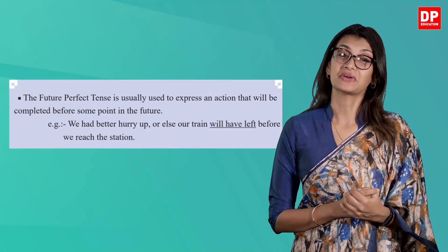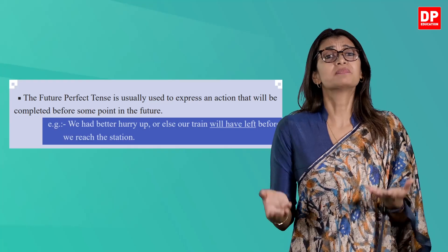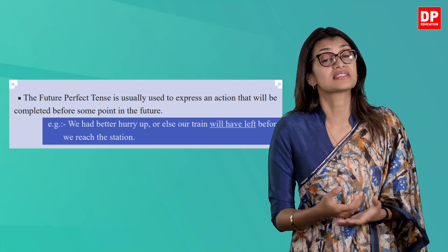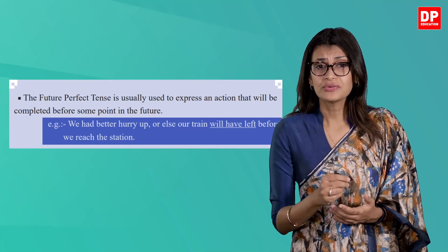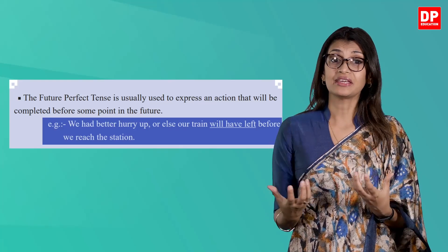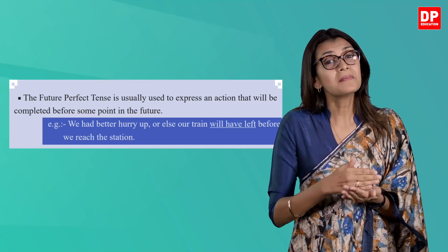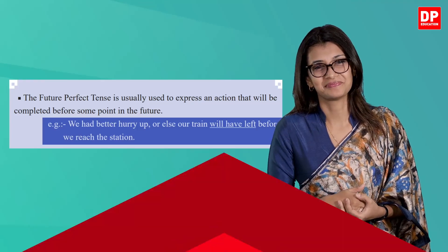Now let's look at the example given in your pupils book again: 'We had better hurry up or else our train will have left before we reach the station.' Through this it is clear that the action of the train leaving will be completed before some point in the future.